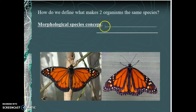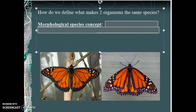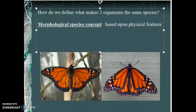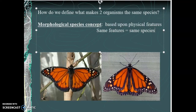One way to look at species is through the morphological concept. The morphological concept says you are the same species if you have the same physical features — same features equals same species. So these two butterflies are the same species morphologically because they both look very similar. That makes them the same species. Is that the best approach?